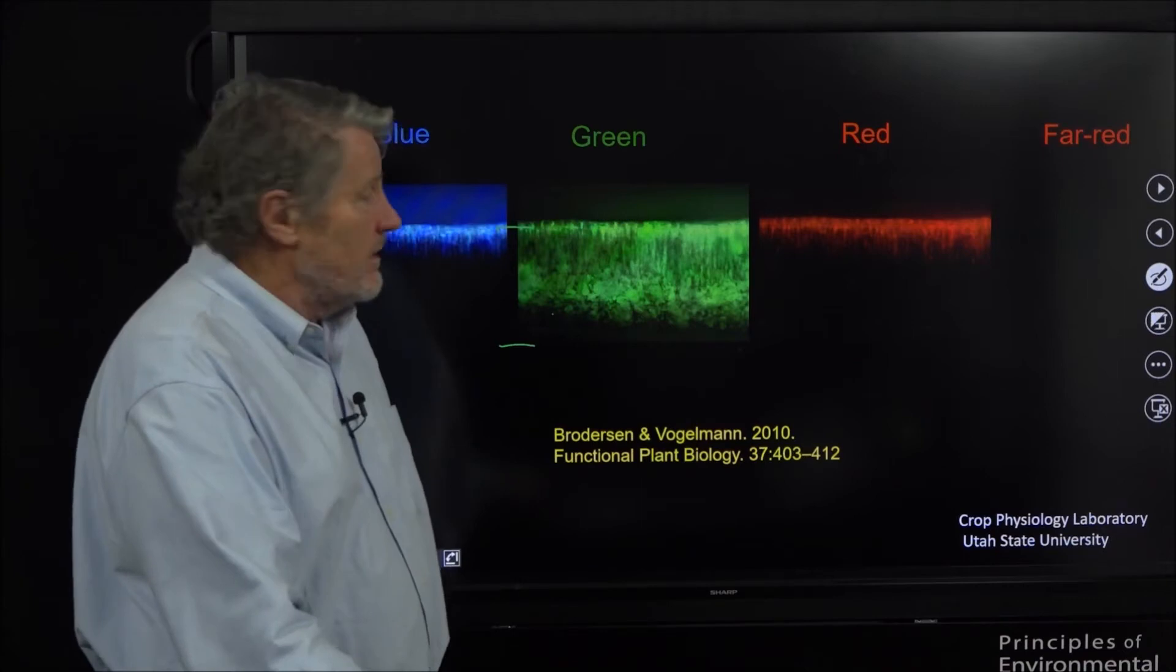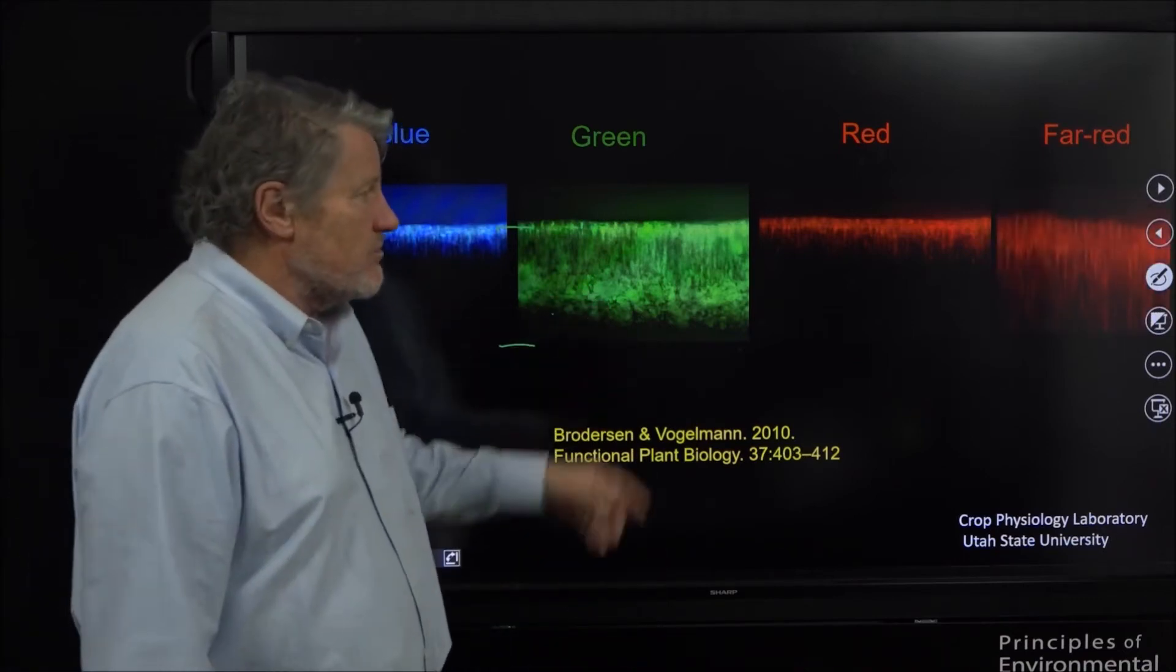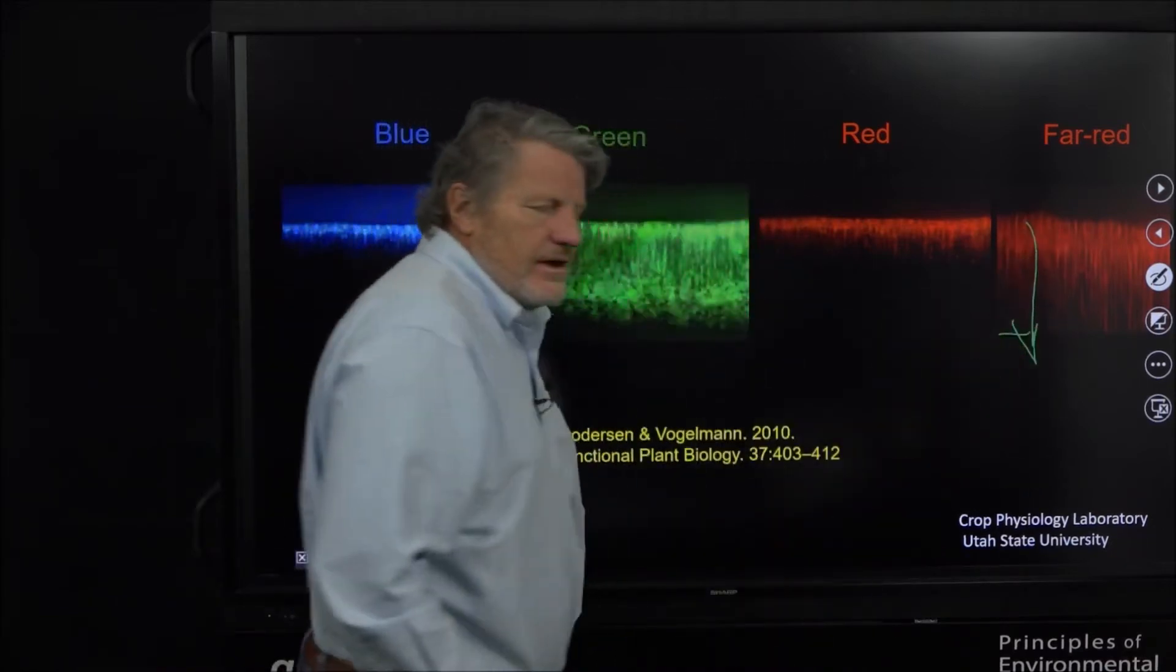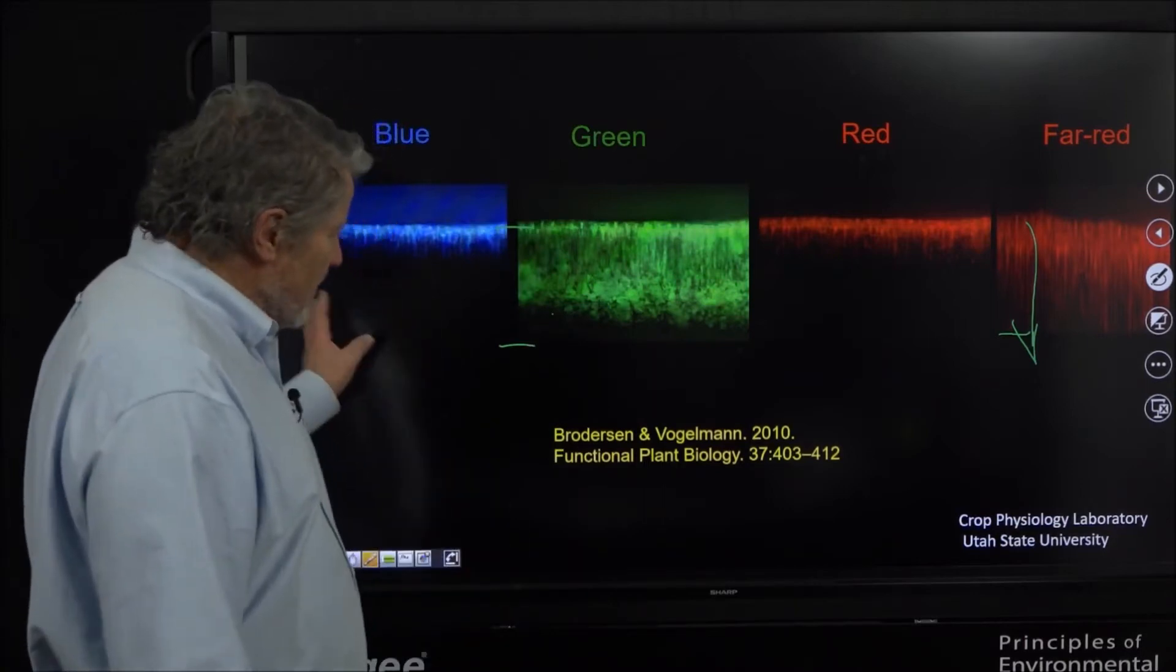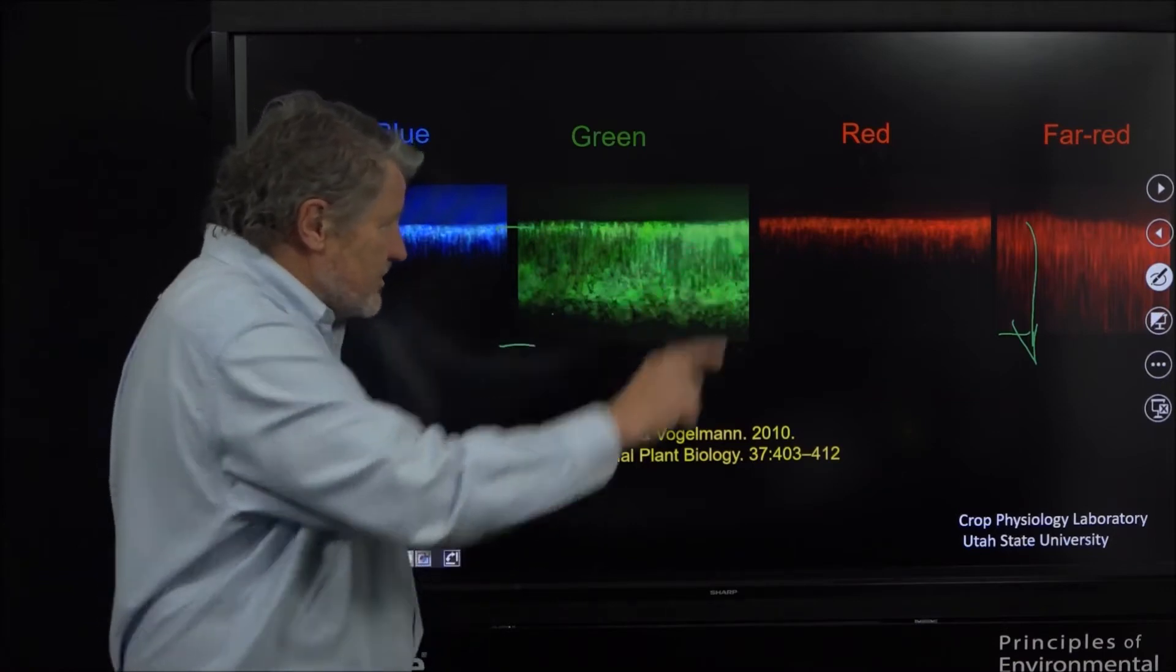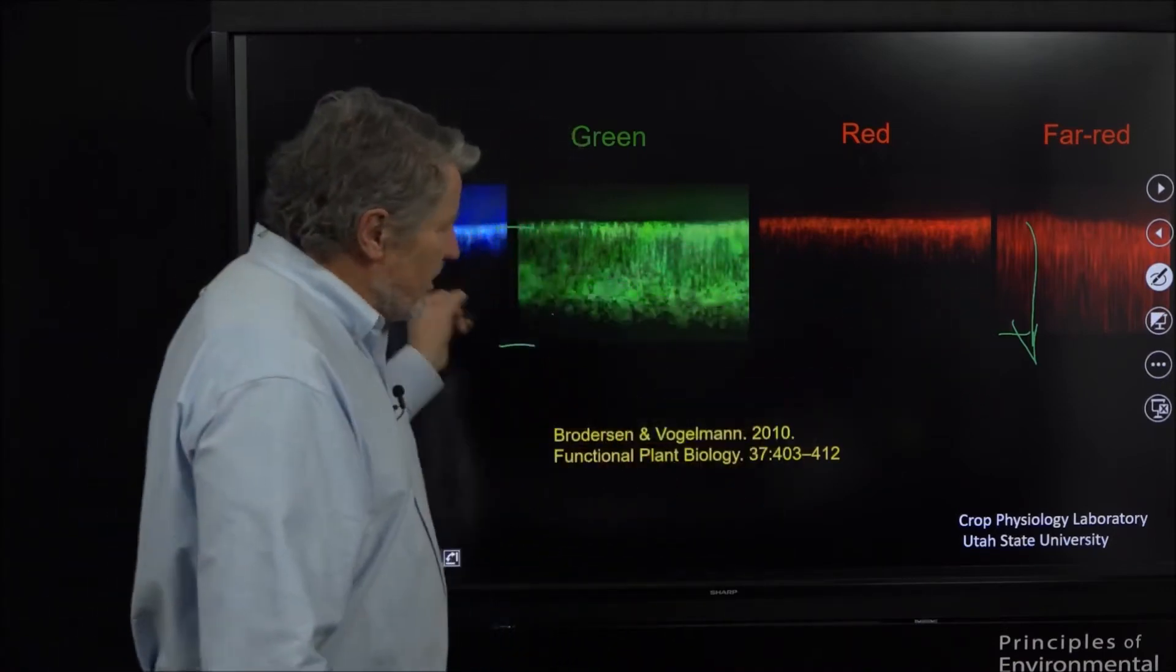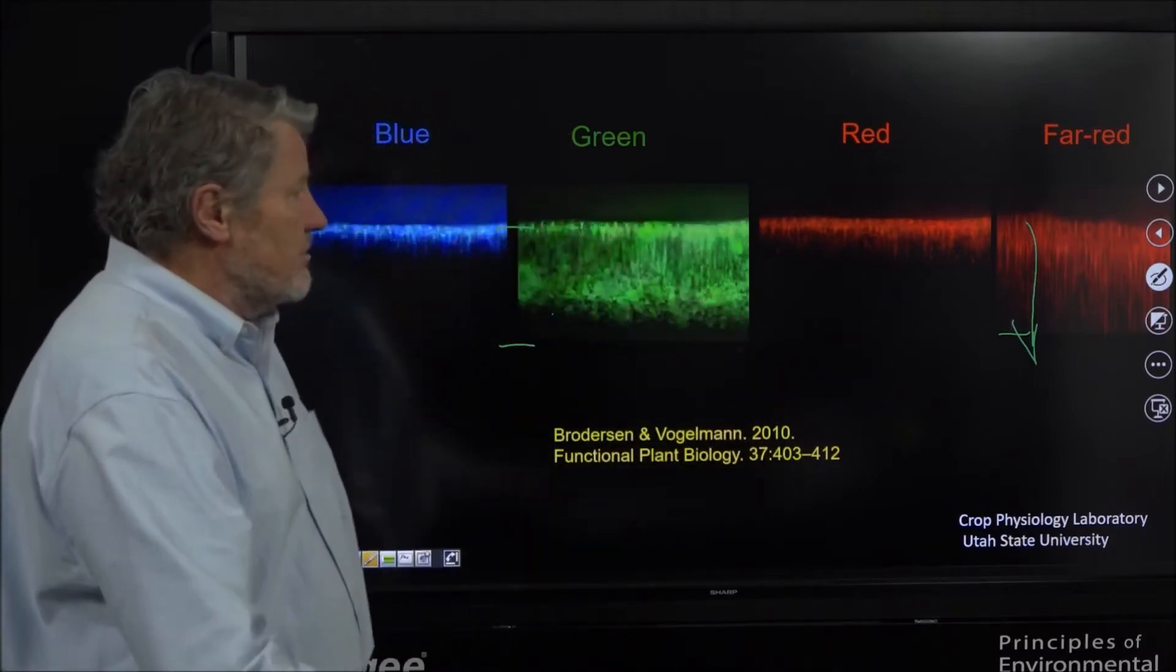It doesn't penetrate nearly as well as green. And finally far red penetrates even better than green - it goes deep into the leaf and that's a good thing. This is from this paper right here by Broderson and Vogelmann. It's a beautiful paper with these nice images. I added the far red - they didn't study far red but these are nice side views of a leaf with penetration of light.